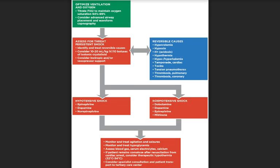Now for the pediatric post-resuscitation care algorithm. First, optimize ventilation and oxygenation: titrate FiO2 to maintain oxygen saturation between 94% and 99%. Consider advanced airway placement and waveform capnography. Then assess for persistent shock, identify and treat reversible causes, and consider 10 to 20 mL per kg IV/IO boluses of isotonic crystalloids. Consider inotropic and/or vasopressor support.